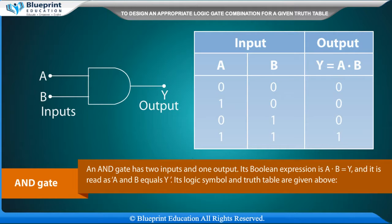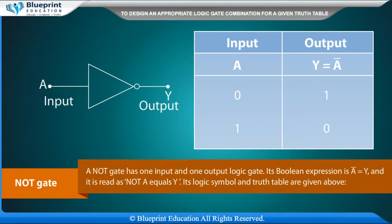An AND gate has two inputs and one output. Its boolean expression is A dot B equals Y, and it is read as 'A and B equals Y'. Its logic symbol and truth table are given above.